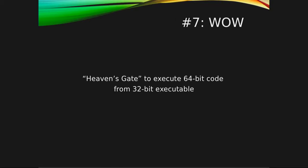The seventh challenge was difficult because it was using Heaven's Gate to execute 64-bit code from within a 32-bit executable. This is rather tricky because most Windows debuggers cannot handle this situation — when you have a debugger that can only handle 32-bit processes, it cannot go into the 64-bit code.